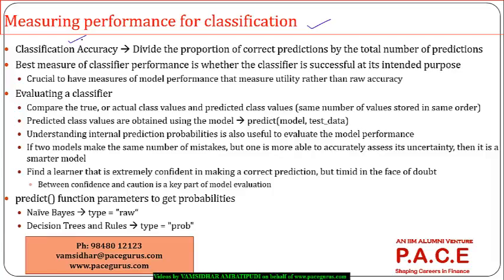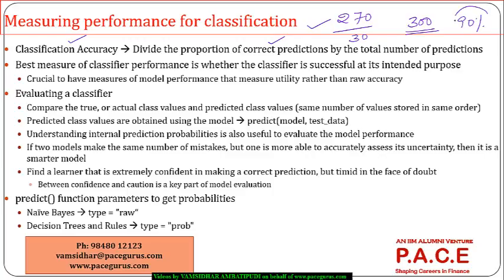The first measure we are all comfortable with is classification accuracy — running the model on the test data and dividing the number of correct predictions by the total number of predictions. For example, if I have 300 test data points, 270 are correctly predicted and 30 are wrongly predicted, then the classification accuracy is 270 divided by 300, making it 90%.